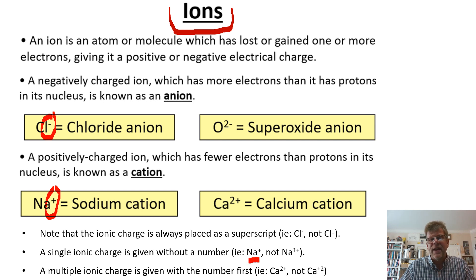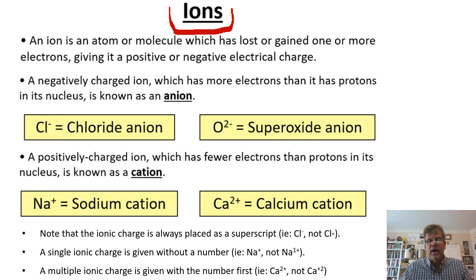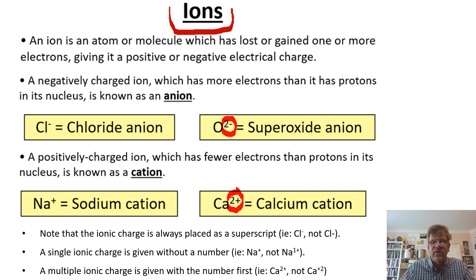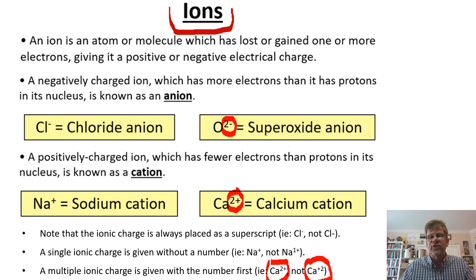For instance, the sodium cation would be Na+, not Na1+ — that would be wrong. For multiple ionic charges, the superscript on oxygen is 2−, so that's a doubly negative anion. Calcium below it has a doubly positive ionic charge written as Ca2+, not Ca+2 — that's a common mistake. The convention is the number first and then the charge sign. It may seem trivial but it is a necessity to know.